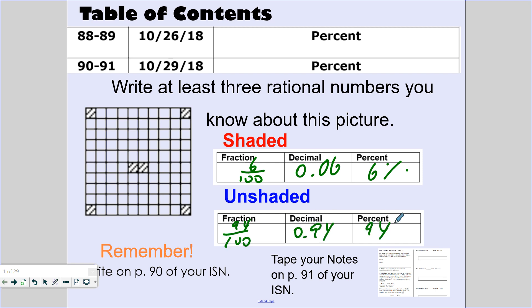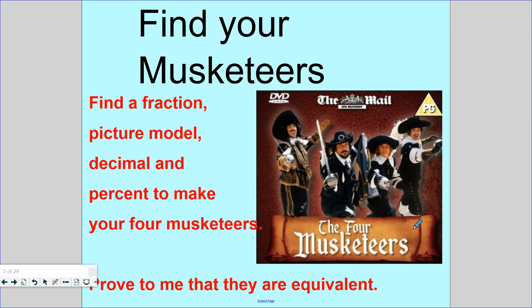So what you're going to do today is you're going to be finding your musketeer. You'll be given a fraction, a picture model, a decimal, a percent, and you're going to walk around the classroom and look for your musketeer. Then you're going to prove to me why you are equivalent.